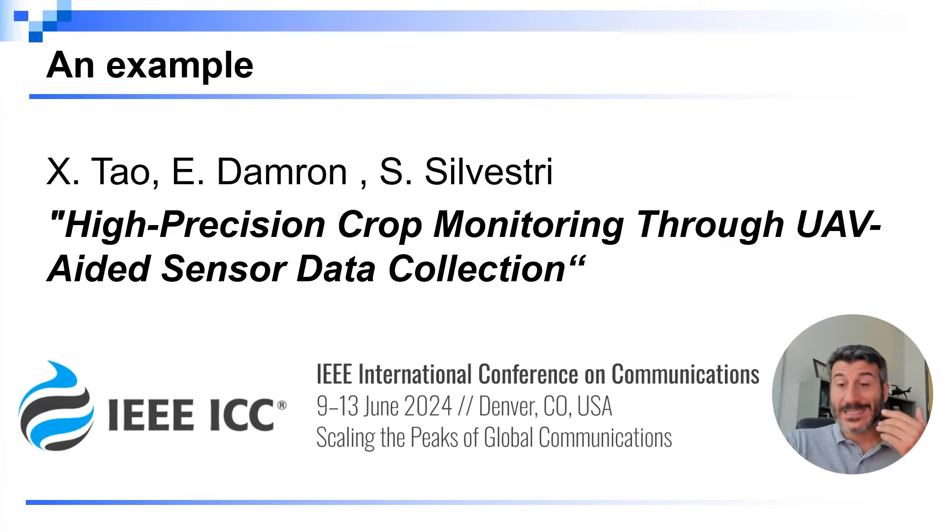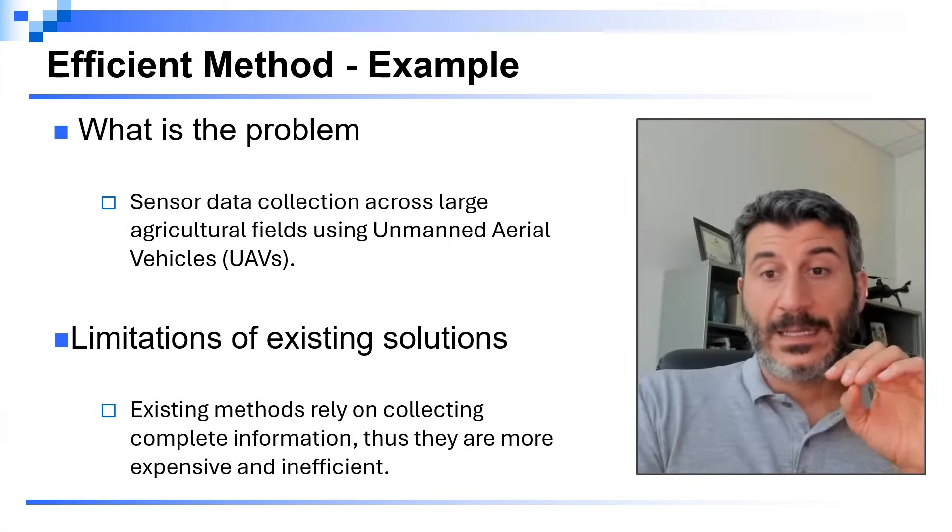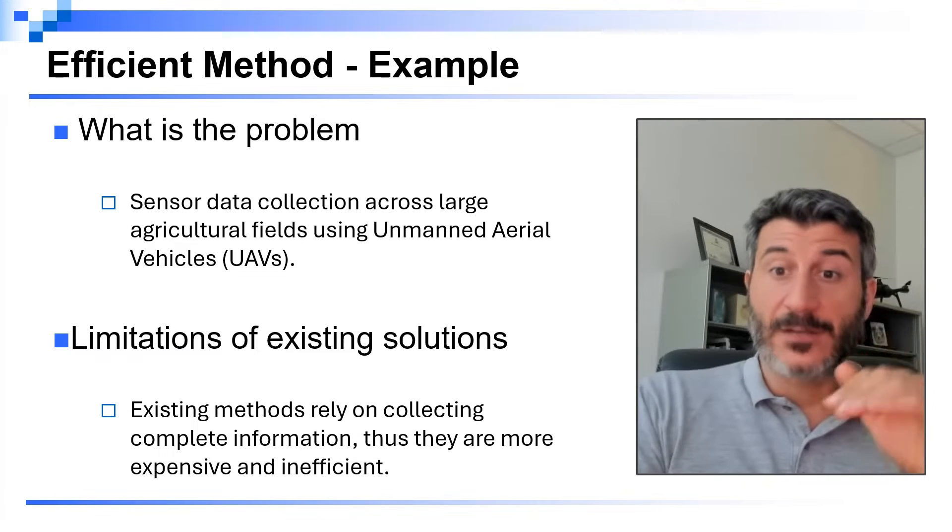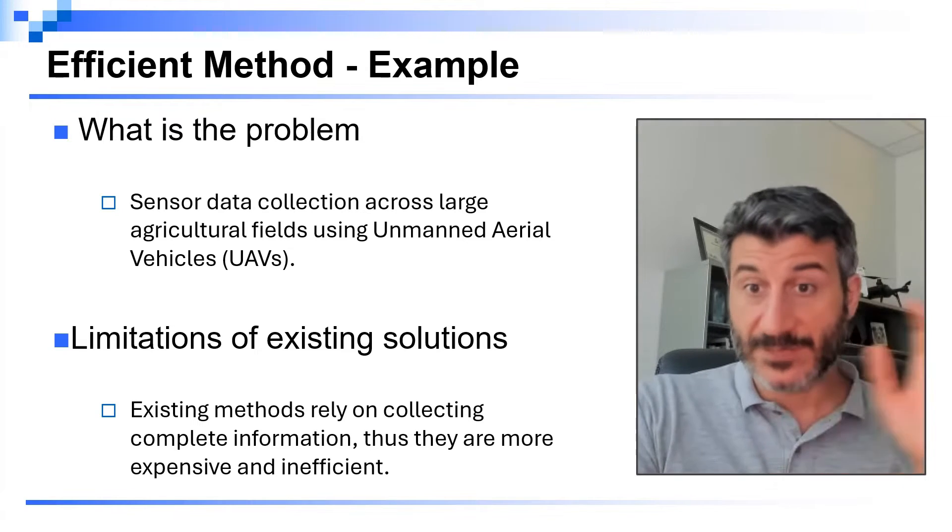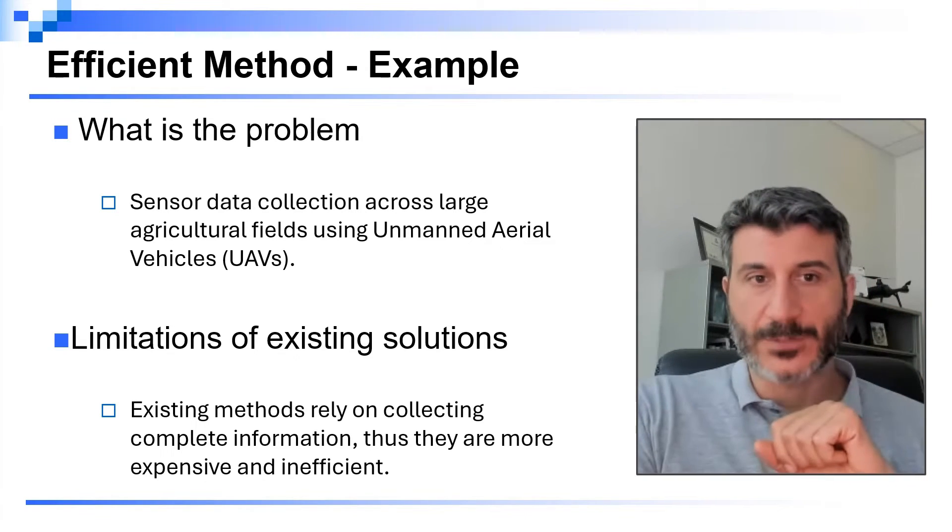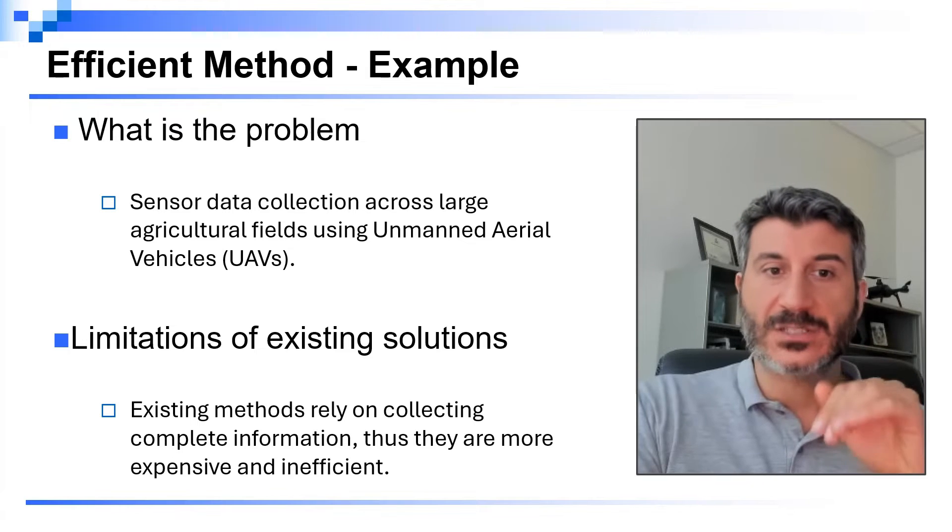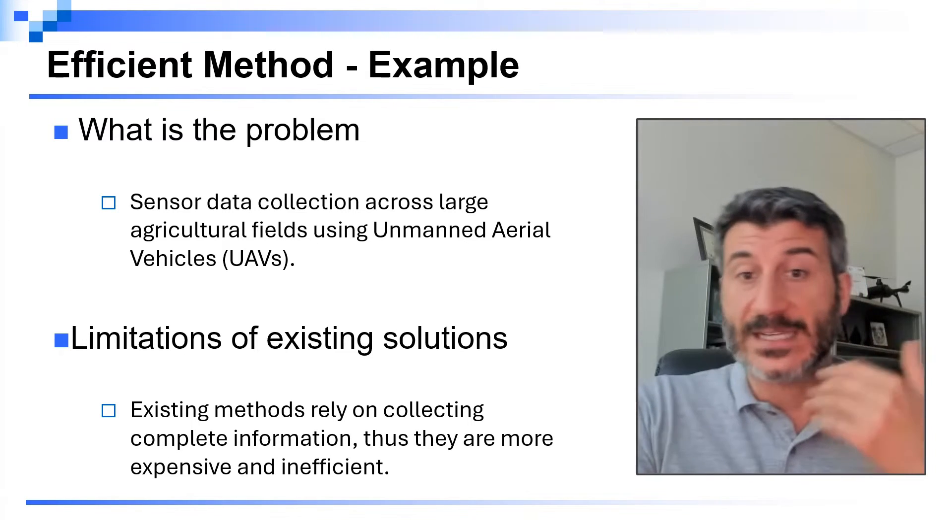I'm going to provide you now an example of how this method works using ChatGPT. Here, I'm considering a paper that we recently published at IEEE ICC conference, and the paper is titled, High Precision Crop Monitoring Through UAV-Aided Sensor Data Collection. The paper has to do with collecting data using drones in an agricultural setting. Let's now write a sentence following each of those components. First, what is the problem? Sensor data collection across large-scale agricultural fields using unmanned area vehicles.